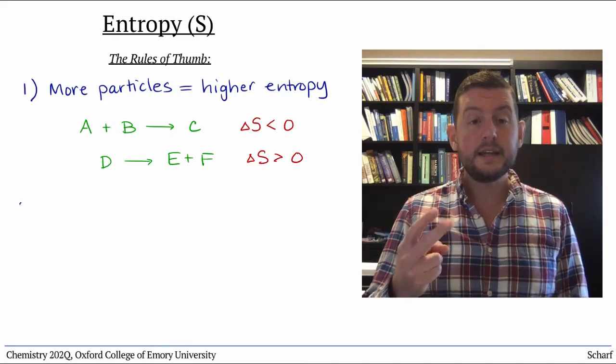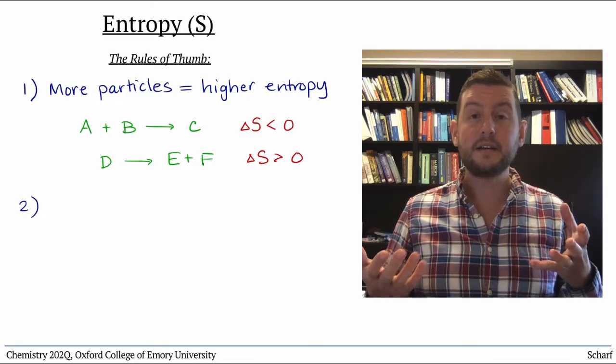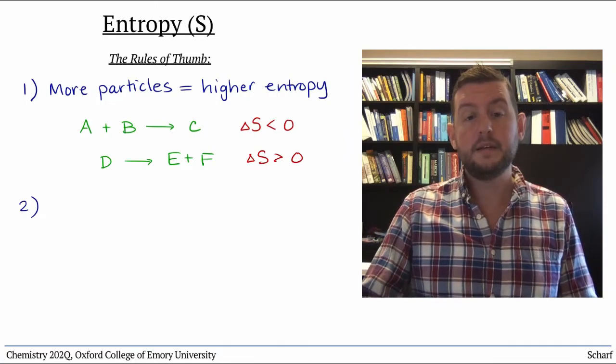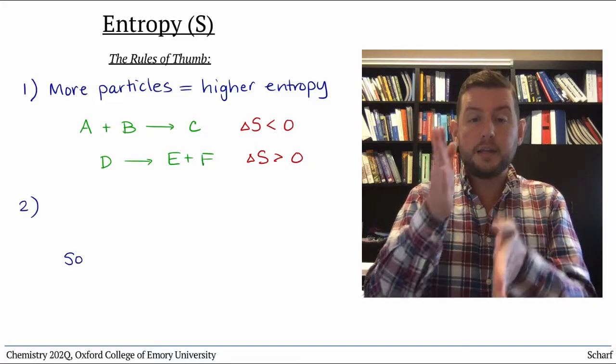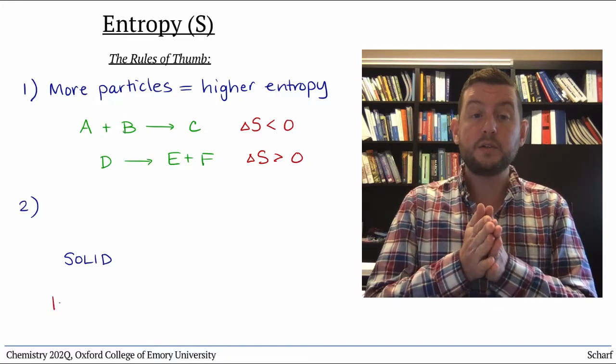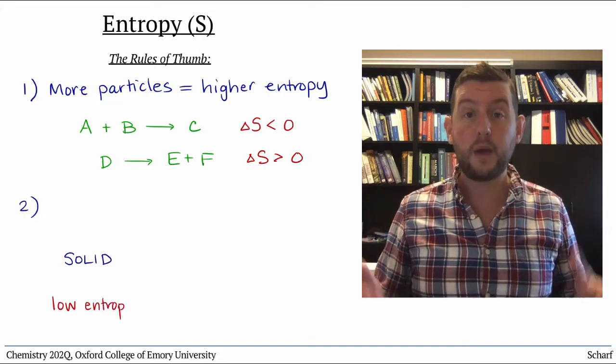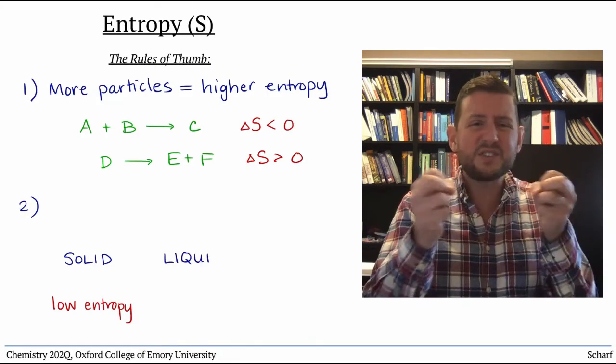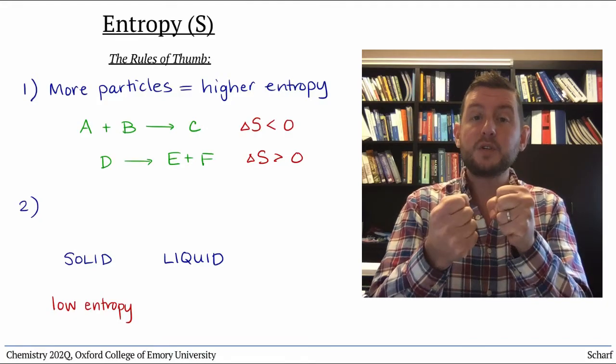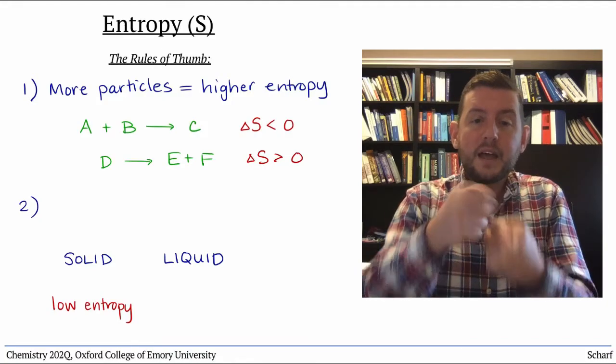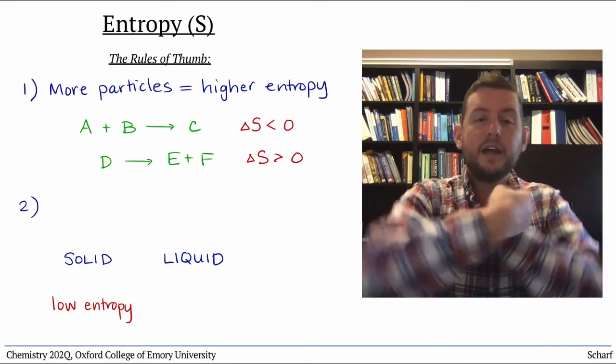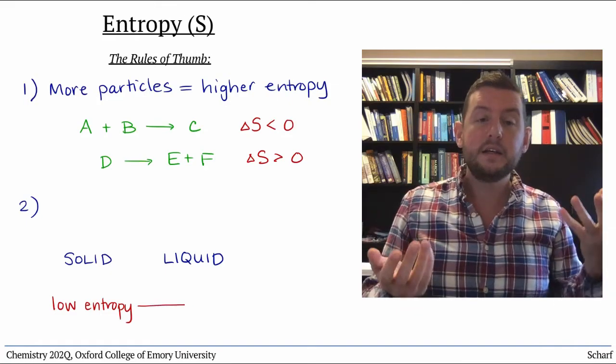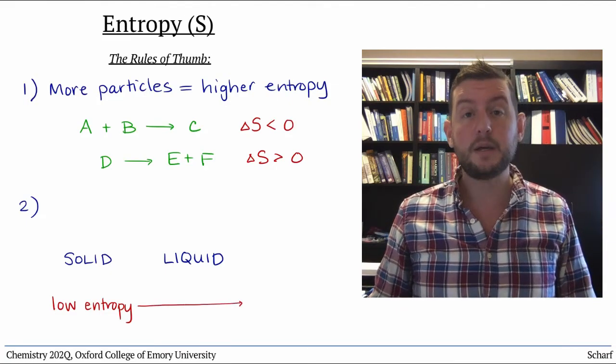Second, states of matter have different entropy. Solids are highly ordered, regular arrangements of particles, and have quite low entropy. In liquids, the particles are still stuck together by intermolecular forces, but more weakly. They flow around each other in a more random way. So liquids have higher entropy than solids.